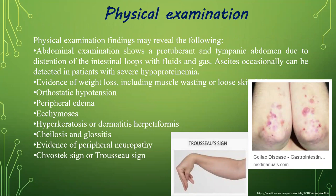Physical examination findings may reveal the following: abdominal examination shows a protuberant and tympanic abdomen due to distension of the intestinal loops with fluids and gas. Ascites can occasionally be detected in patients with severe hypoproteinemia. Evidence of weight loss includes muscular wasting or loose skin, orthostatic hypotension, peripheral edema, ecchymosis, hyperkeratosis, or dermatitis herpetiformis, and evidence of peripheral neuropathy.